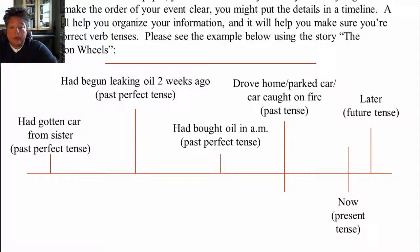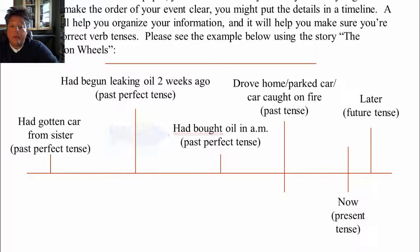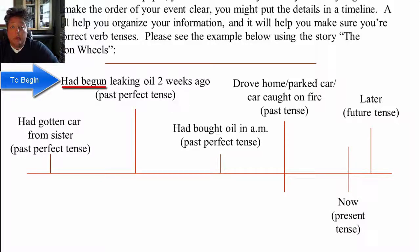For example, before I drove home and parked the car, I had bought oil in the morning. 'Had bought' is the past perfect tense of 'to buy.' And before I bought the oil in the morning, two weeks before that, the car had begun leaking oil. So again I'm using the past perfect tense.